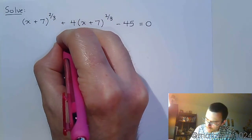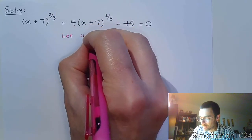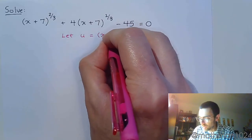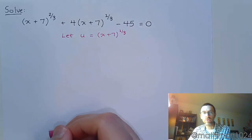And what we do is that we just create a different letter, different variable or symbol to represent the complicated piece of the problem. So I'm going to let u equal x plus 7 to the 1/3.